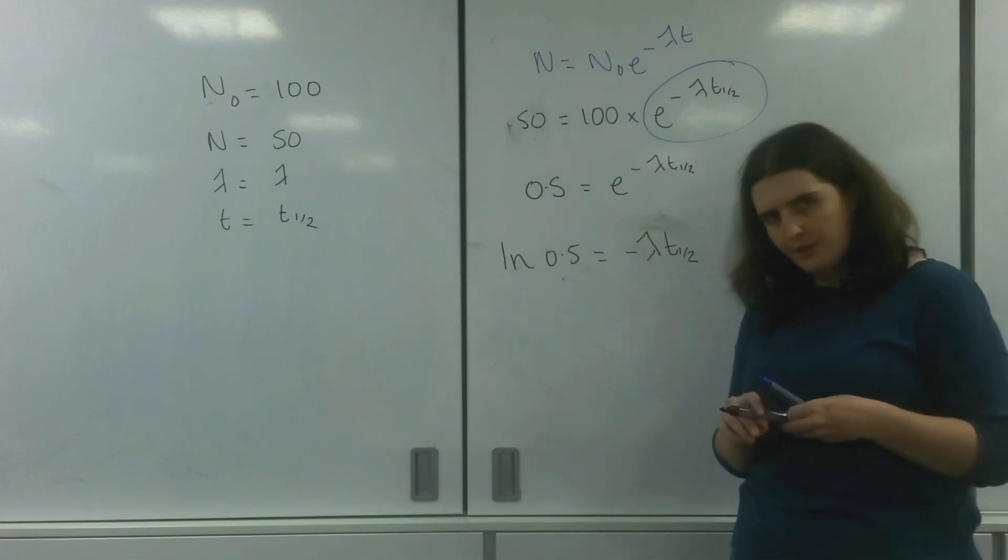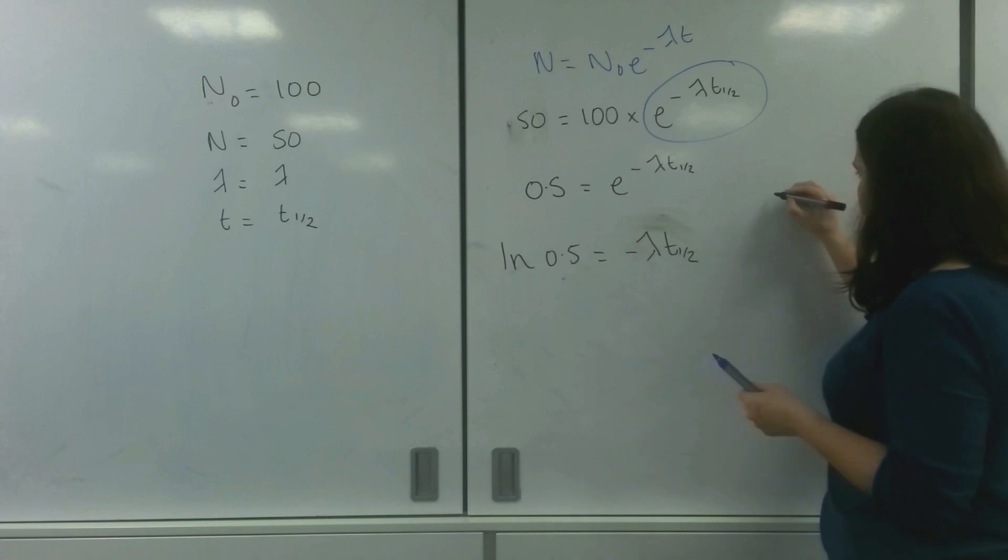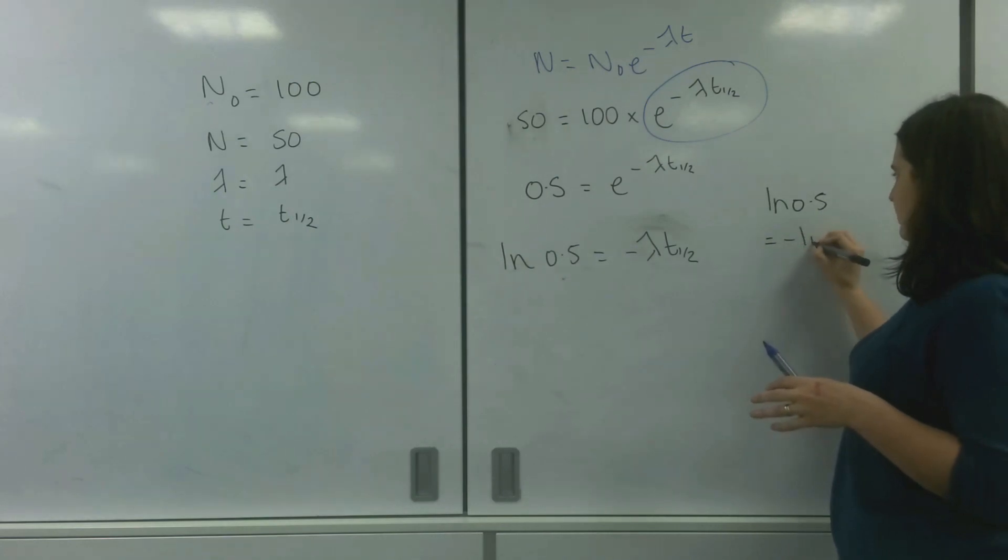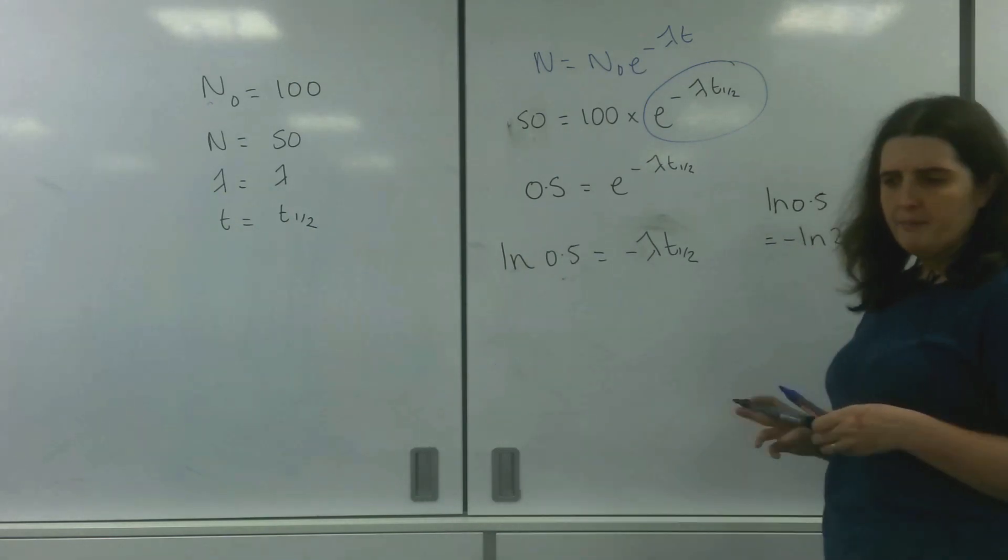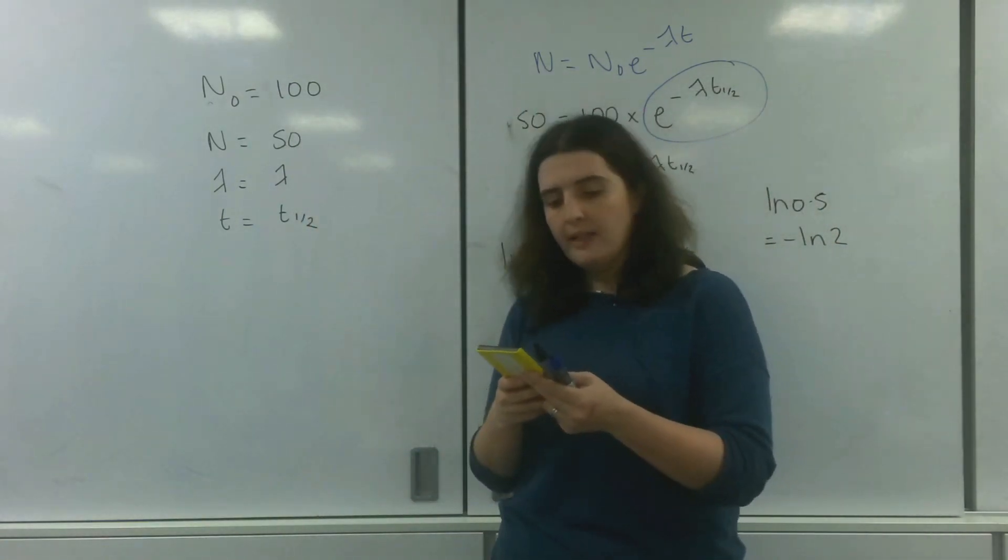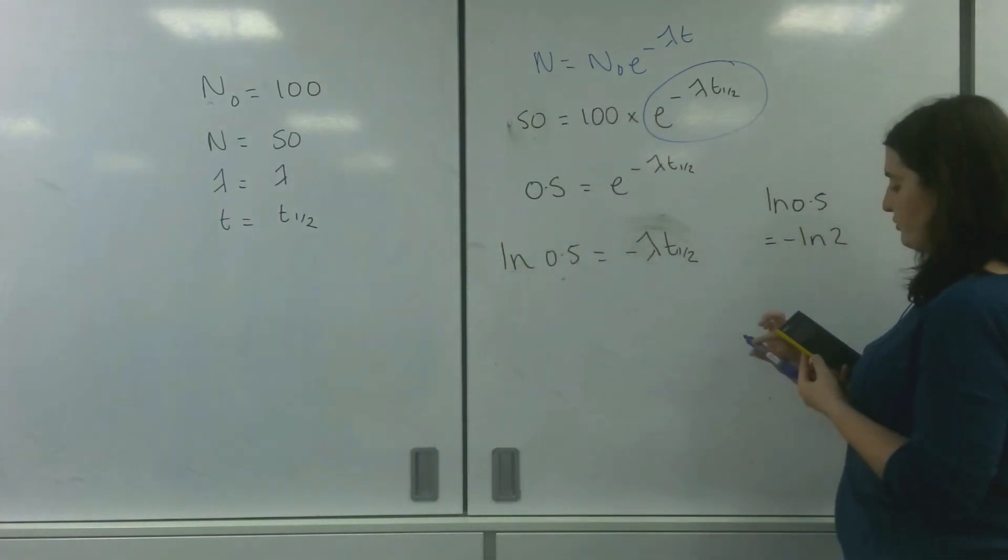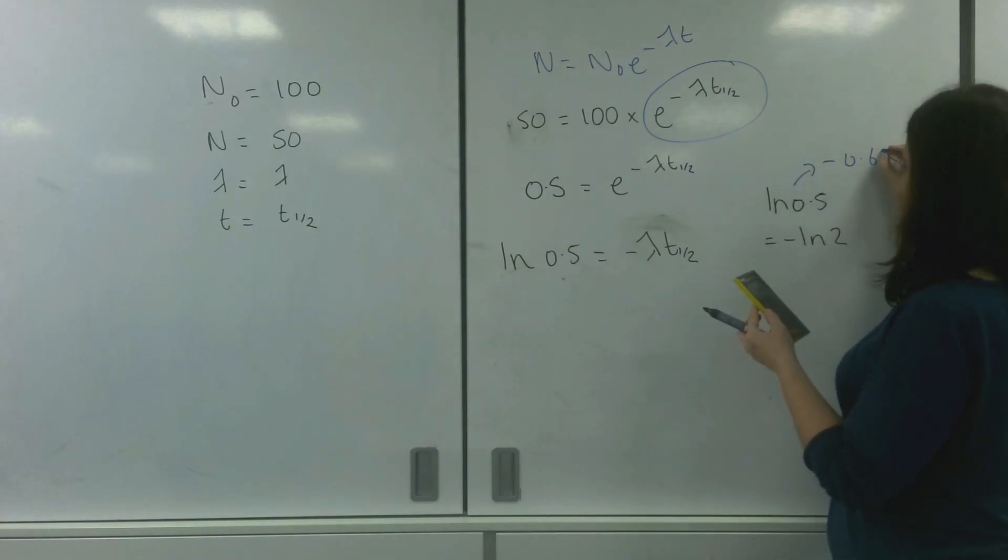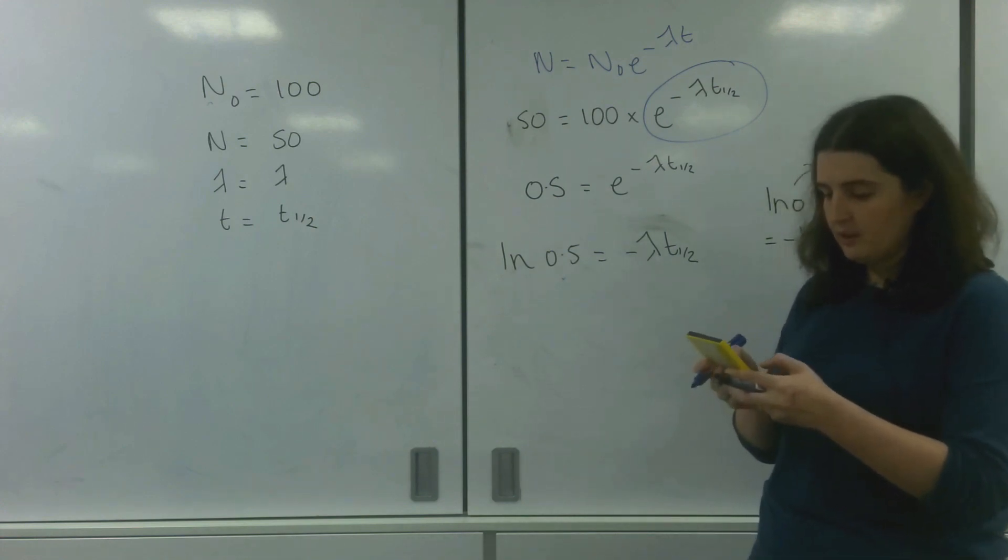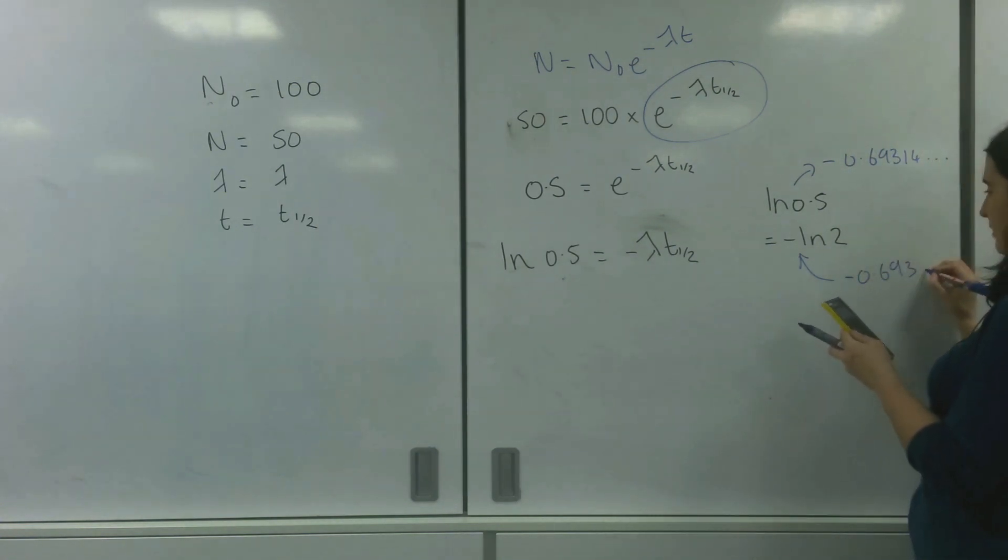Now importantly, if you put it into your calculator, what's really interesting is that ln(0.5) also equals minus ln(2). So you can grab a calculator now and I will as well. So ln(0.5) is minus 0.69314, and minus ln(2) also equals minus 0.693.